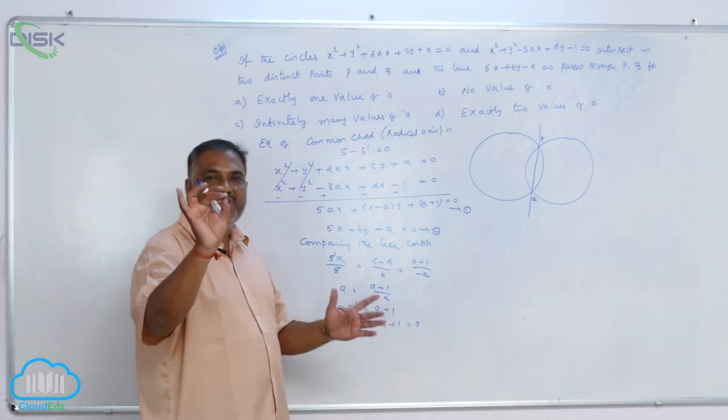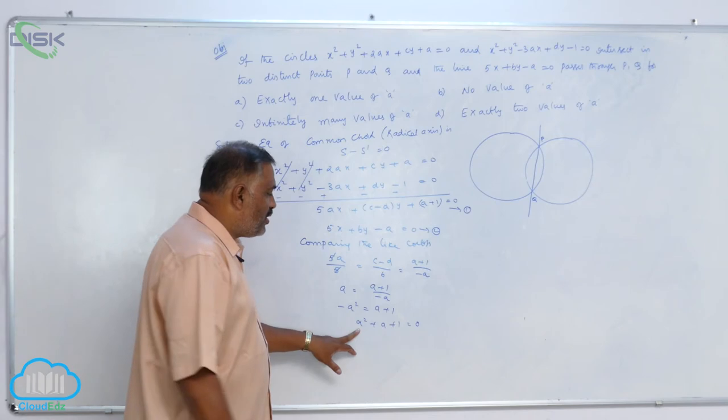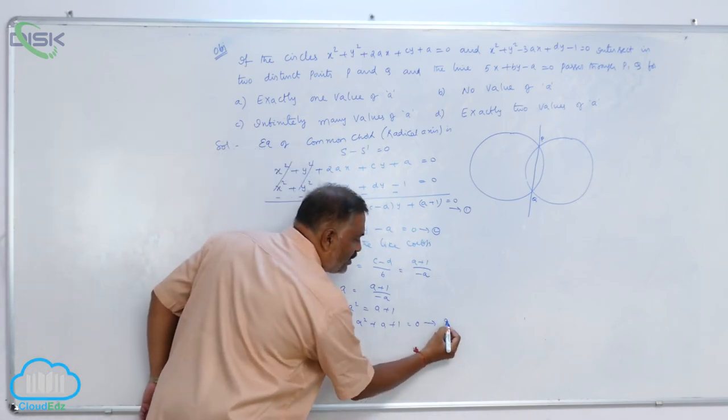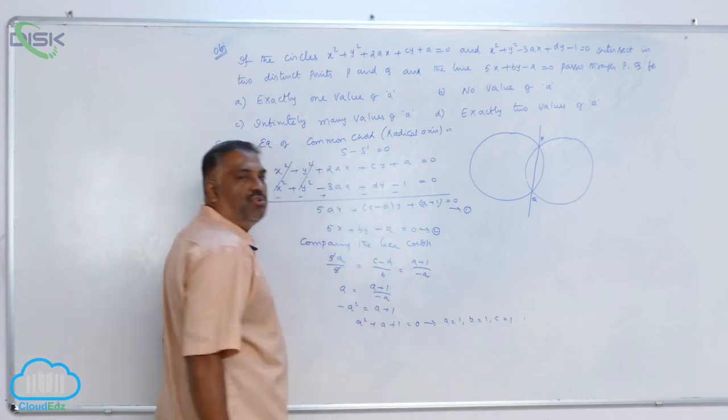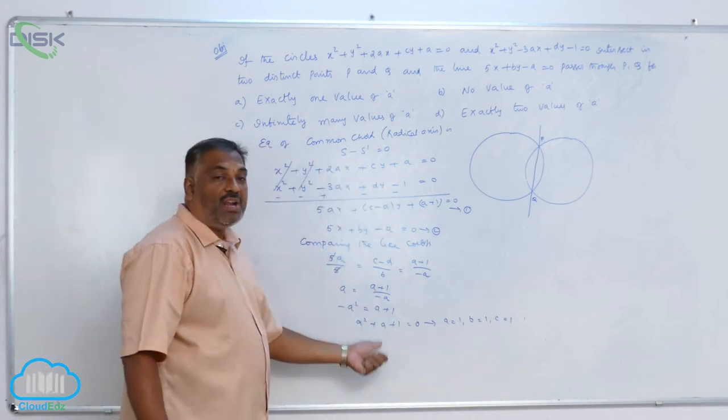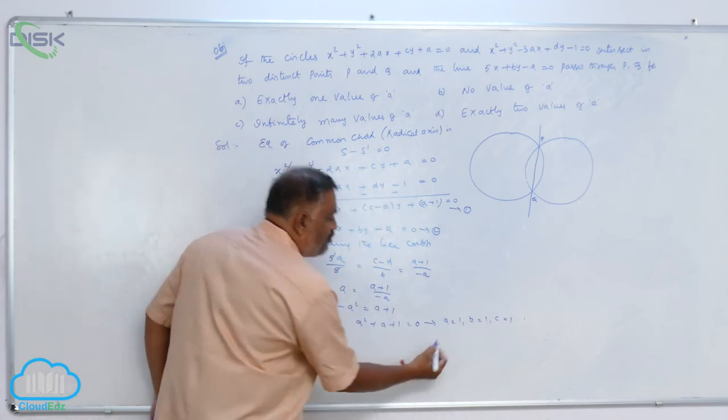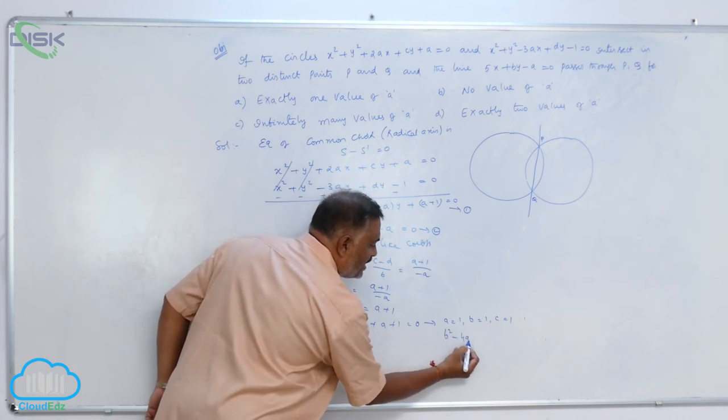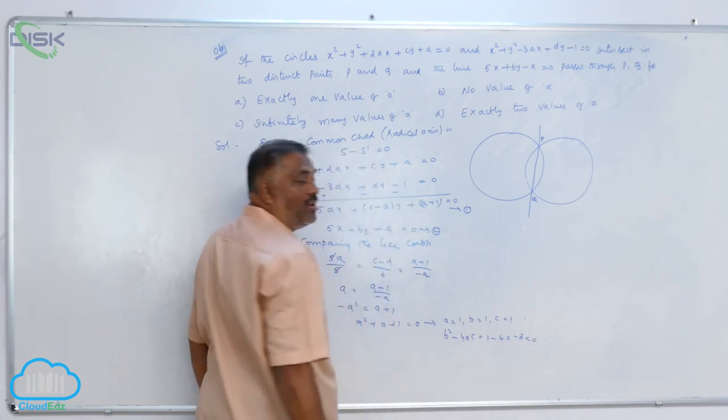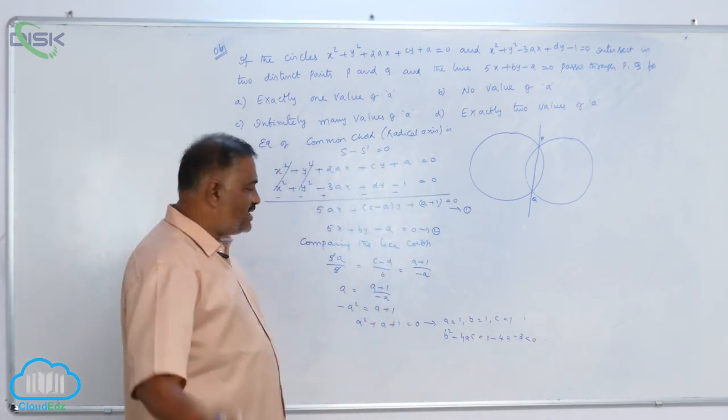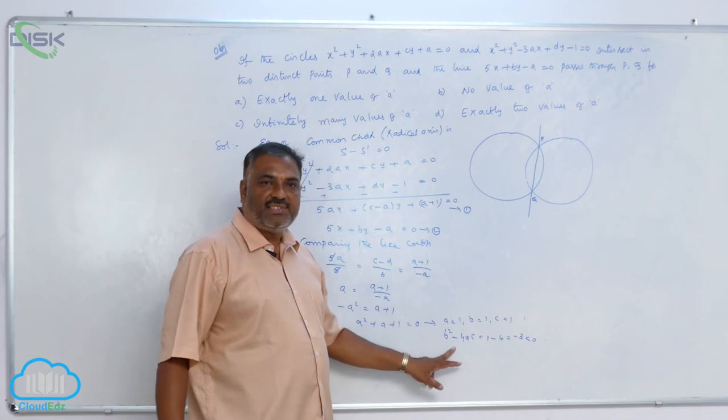Now observe here: a value is equal to 1, b value is equal to 1, c is equal to 1. What is the nature of roots? We will see b square minus 4ac: b square is 1 minus 4 is minus 3, less than zero. From quadratic equations, whenever the discriminant is less than zero, a has no real value.